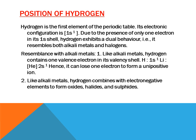Hydrogen is the first element of the periodic table. Its electronic configuration is 1s1. Due to the presence of only one electron in its 1s shell, hydrogen has dual behavior, i.e., it resembles alkali metals and it resembles halogens both. Like alkali metals, it can contain one valence electron in its valence shell. As hydrogen has electronic configuration 1s1, lithium also has electronic configuration inert core 2s1, meaning lithium also contains a single electron in the outermost shell. Hence it can lose one electron to form a monopositive ion.